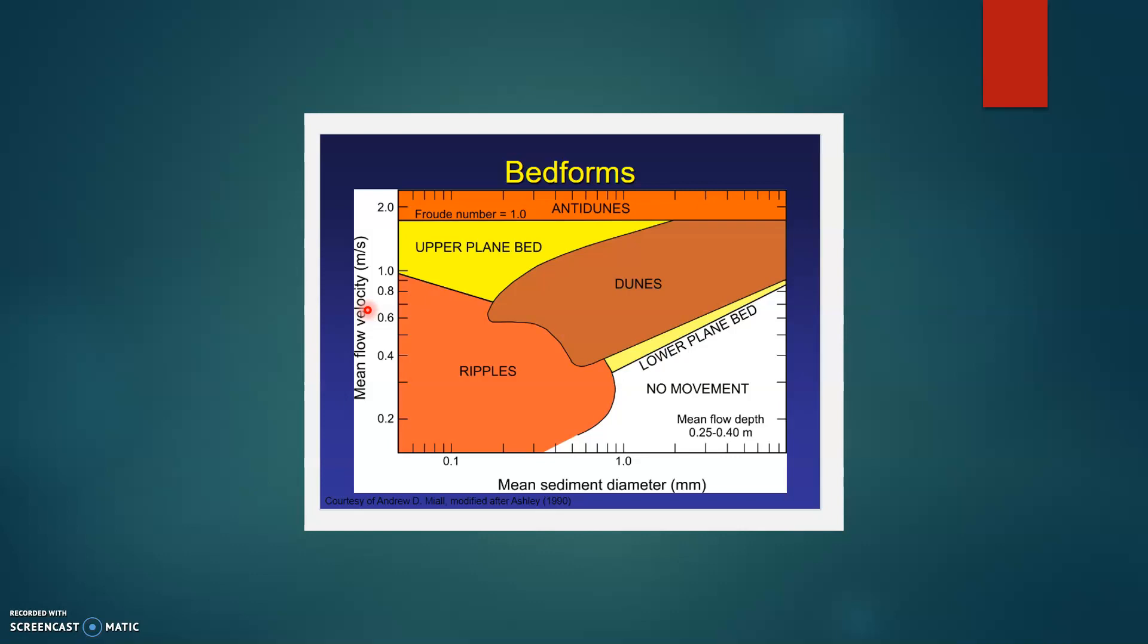This graph can be divided into three sections: an upper flow regime, a lower flow regime, and a transition zone.